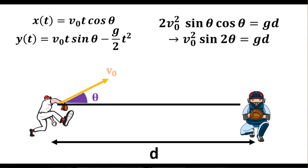So to simplify the expression, we get that 2 v0 squared times sine theta times cosine of theta equals gd. And we can use the identity that sine of 2 theta equals 2 sine cosine to simplify. And so we get that sine of 2 theta equals gd over v0 squared.